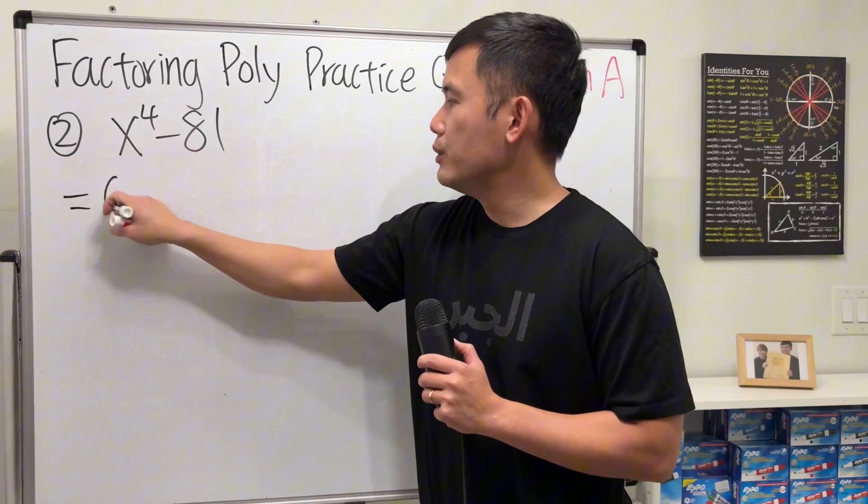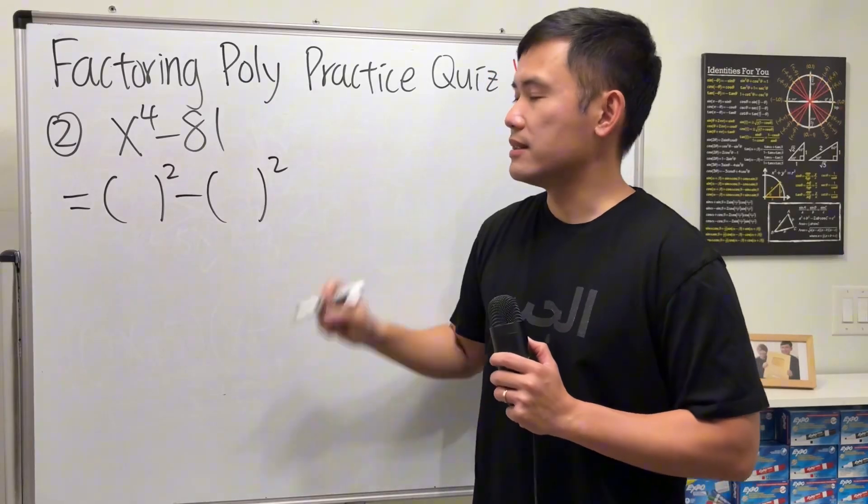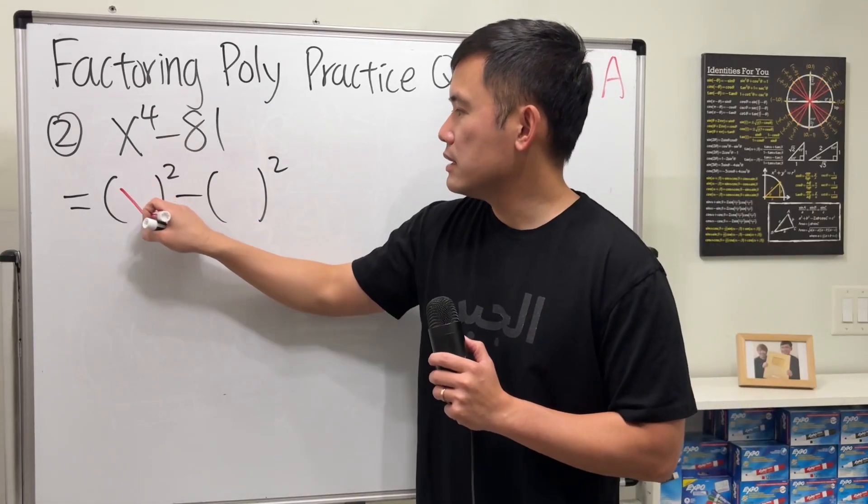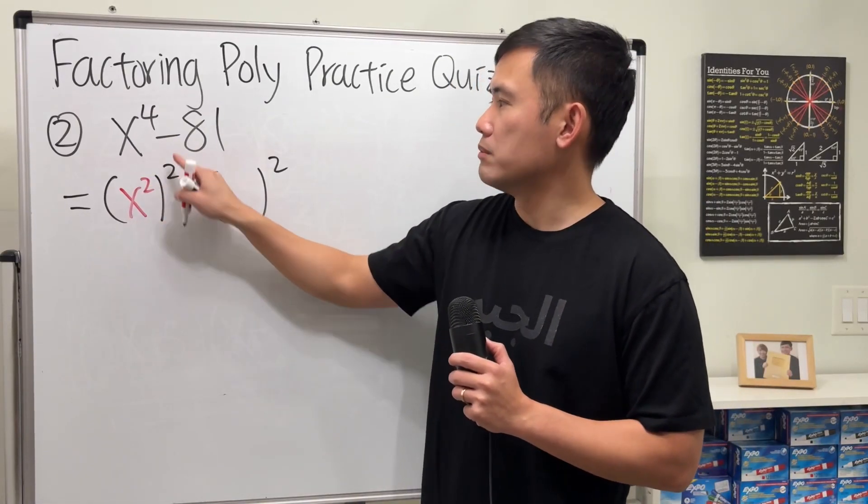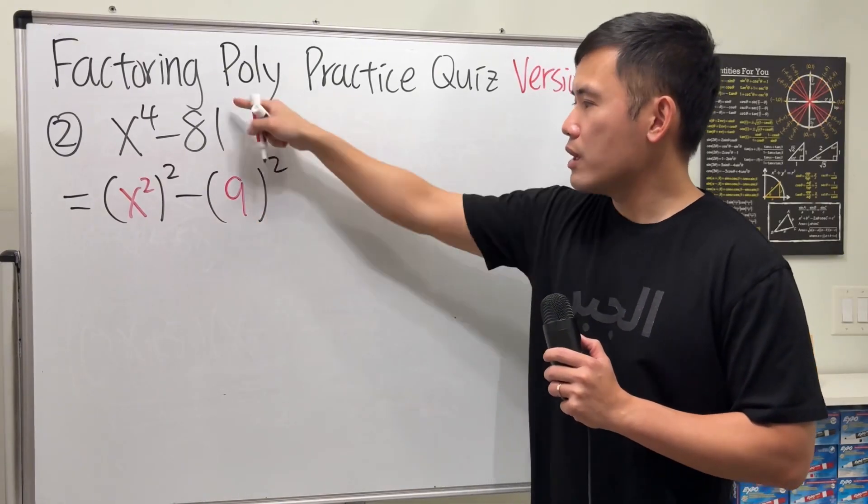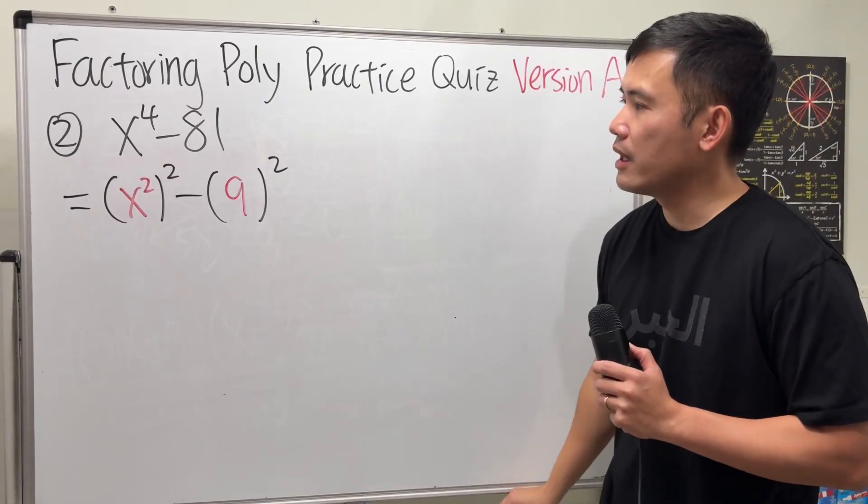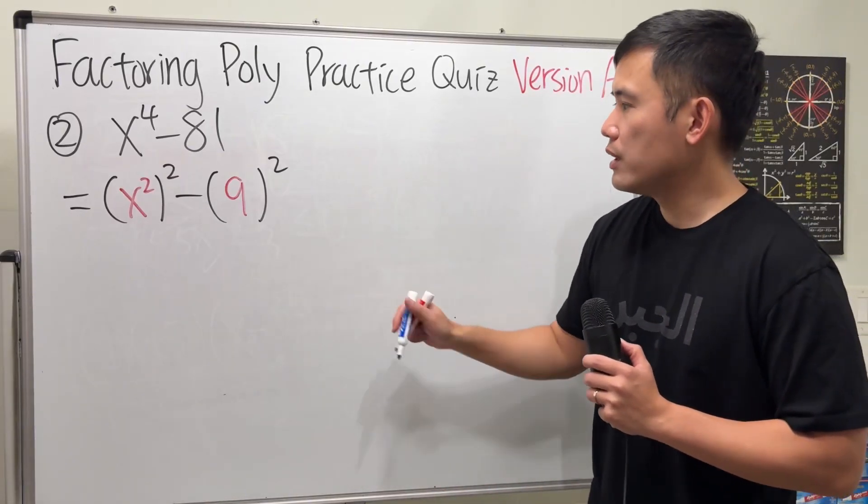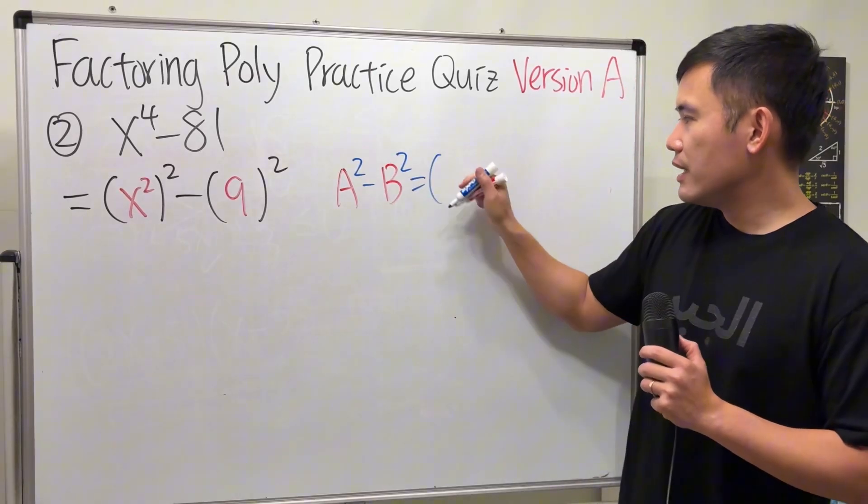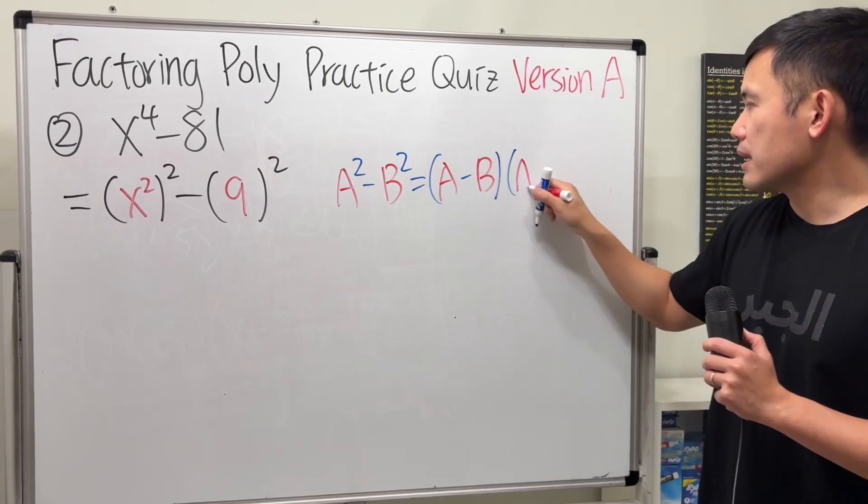X to the fourth power, look at it as something squared. Can we do this? Yes. Because x to the fourth power is x squared and then squared. 81 is the same as 9 squared. Now, let me remind you guys the formula for factoring a difference of two squares. That is a squared minus b squared gives us a minus b times a plus b.